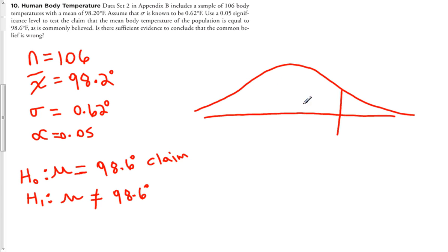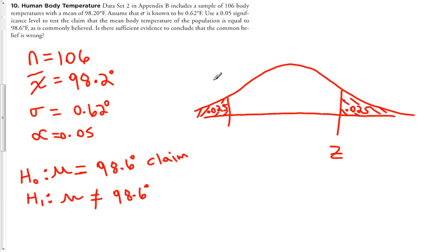Alpha is 0.05, so alpha over 2 is 0.025. I'm looking for the Z score that separates 0.025 in the right tail, and by symmetry, 0.025 in the left tail. These two tails form the rejection region — any test statistic falling in the shaded region leads us to reject the null hypothesis; otherwise, we fail to reject.